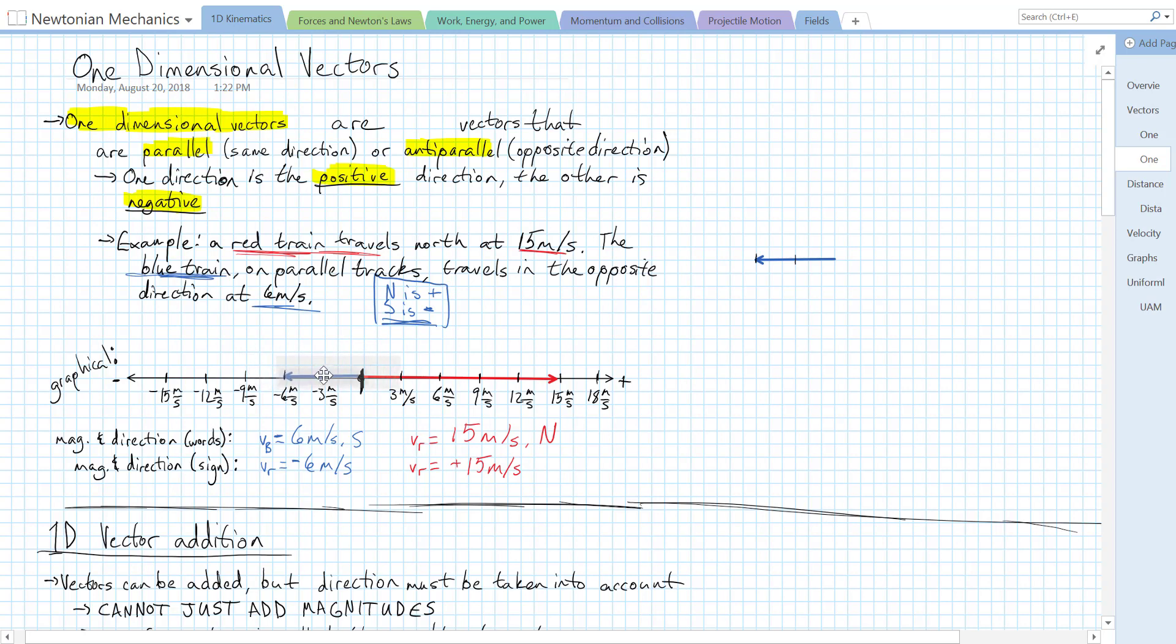And our blue vector points in the negative direction with a length of 6 meters per second. So if it's starting at the origin, it ends at negative 6 meters per second.